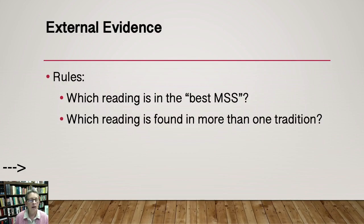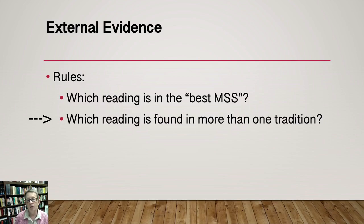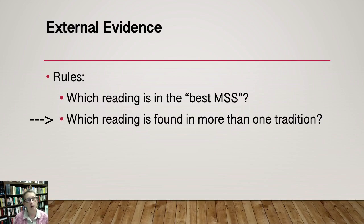Let's start with external evidence, and I'll give you two rules — there are others, but these are the two probably most helpful for you at this stage. When you're looking at the manuscripts, you'd be asking: which reading is in the best manuscripts? What we just looked at, I pointed out that there are good manuscripts in both groupings — the oldest manuscript had Kai, one of the other best manuscripts did not have it. Similarly, which reading is found in more than one tradition? We noticed that even though there was some variation in tradition for the reading Kai, the omission of Kai was actually more clearly in all four textual traditions. So that made this a very hard choice.